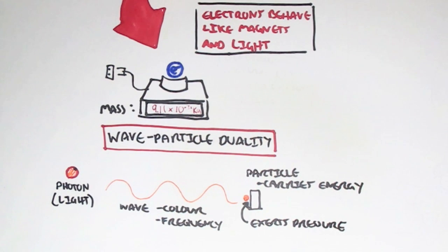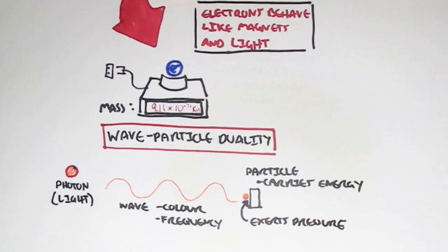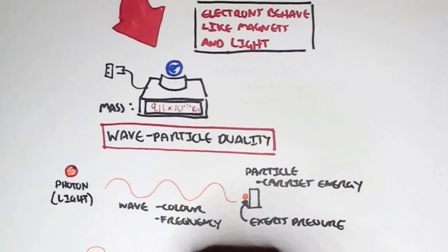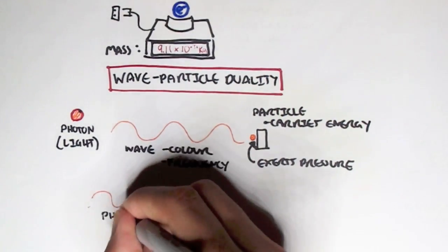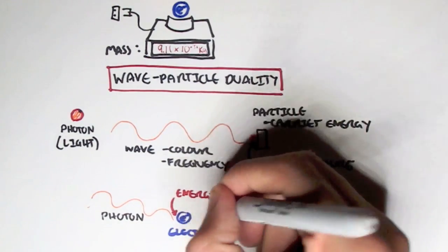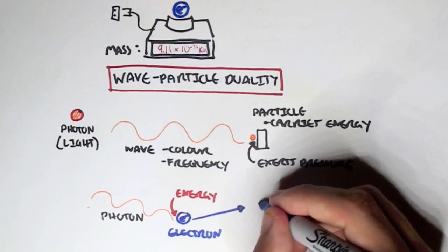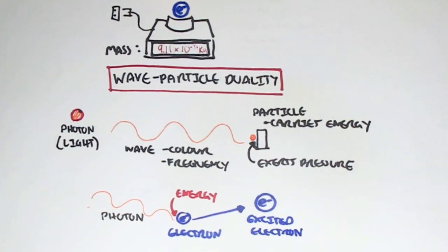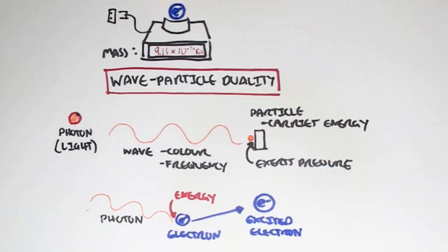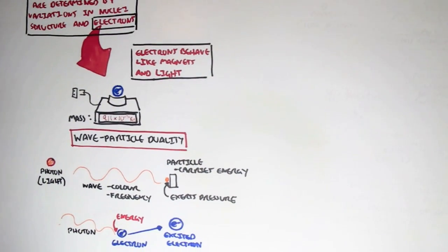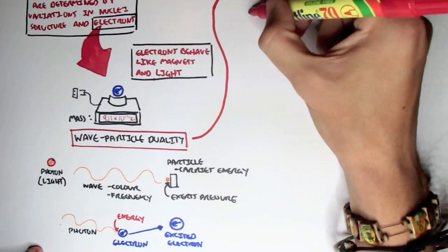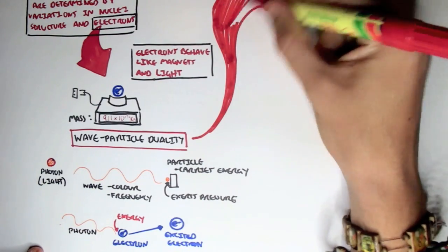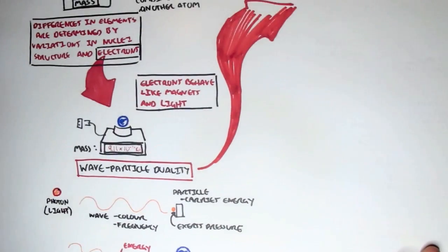For example, a photon can even hit an electron. And because a photon carries energy, when it hits an electron, it provides energy to the electron, and so the electron will become excited. An electron, as I mentioned, also has this wave and particle duality. So let's have a closer look at this duality relationship.